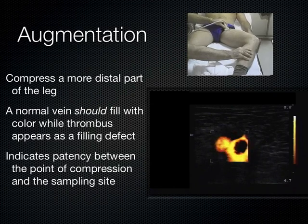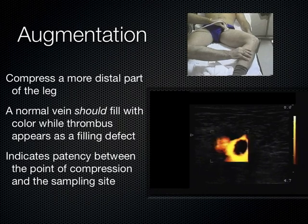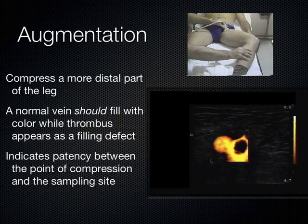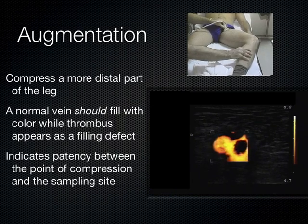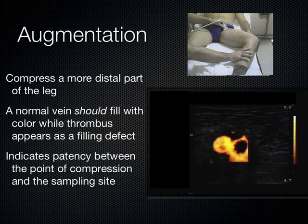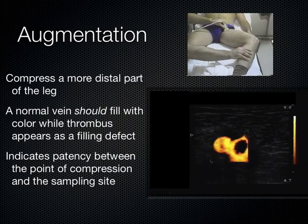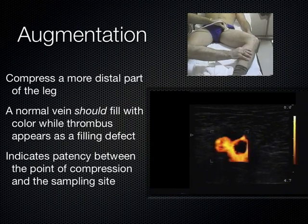There's another technique called augmentation — you put the probe proximally, squeeze the calf distally, and see if there's flow under the probe in that vein. If you see flow augment there, you assume patency between those two sites. But that's a pretty big assumption — there are lots of collateral systems and compartment pressures that can conduct flow. Augmentation, while fun to do and occasionally diagnostically helpful, is often misleading and can't be relied upon to rule in or out a clot. I like to teach it to medical students because it gets you involved with Doppler and color.